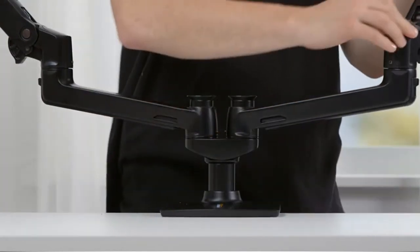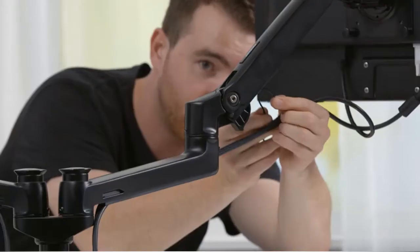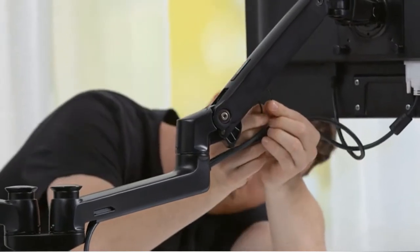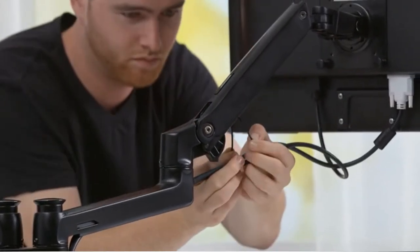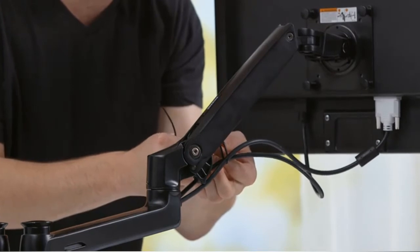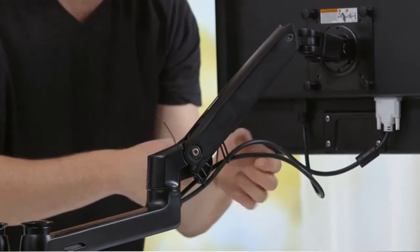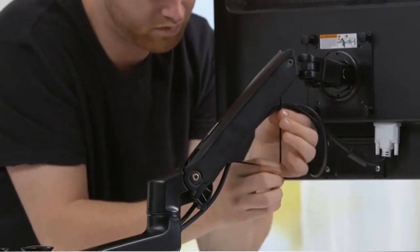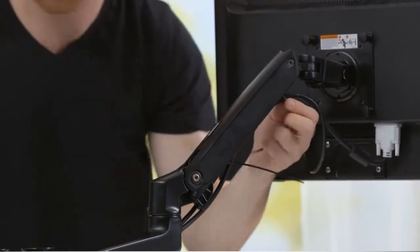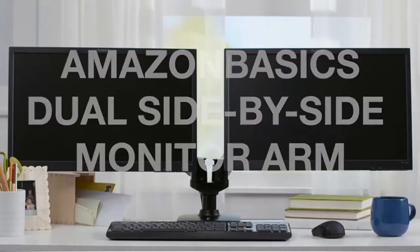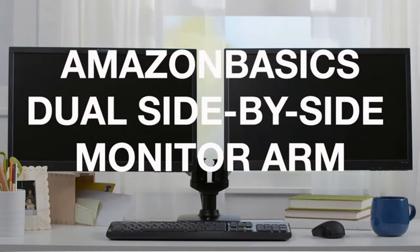Insert the cable ties through the loops on the bottom of the upper arms, then loosely secure the cables to the upper arm with the cable ties. Do not over-tighten the ties. If the ties are too tight and you try to remove them, you may damage the monitor cables. You'll want to see the owner's manual for more detailed instructions.